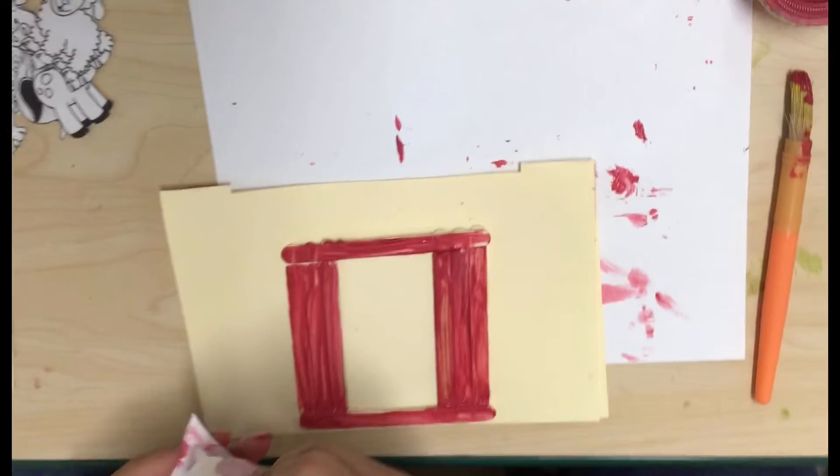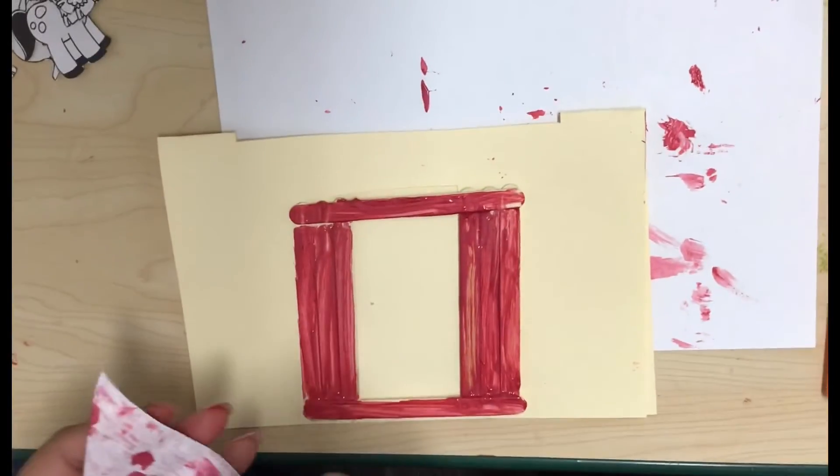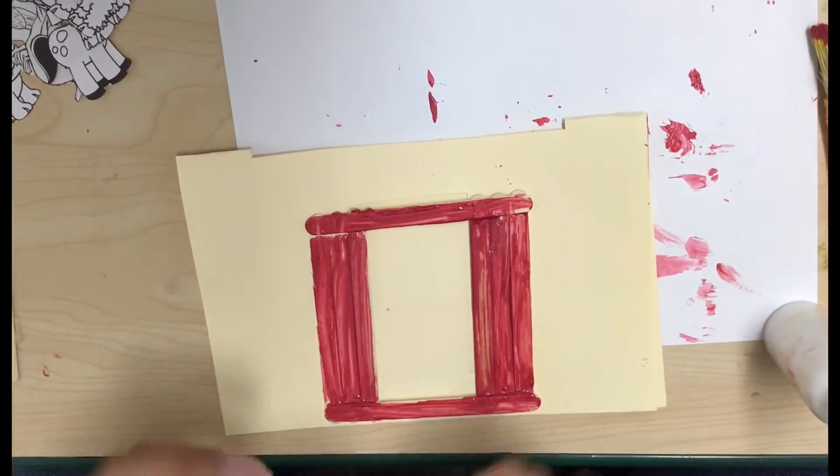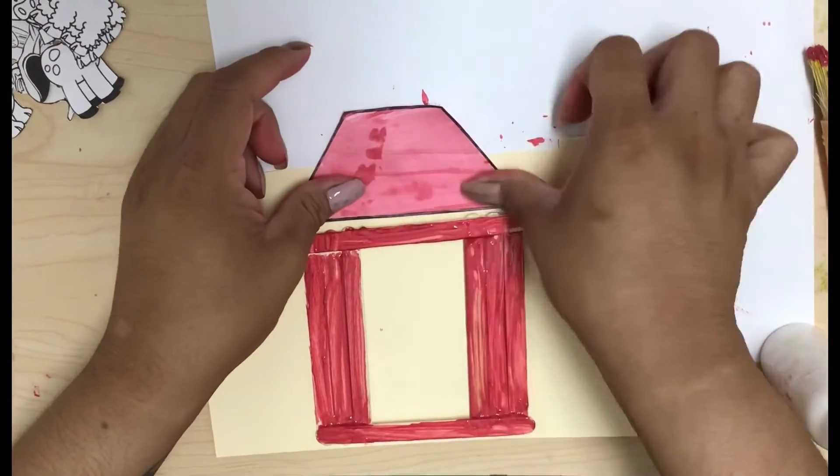Once we have our barn glued we're going to take our glue again and add it to our trapezoid and add it on top of our barn. This is going to be our roof.